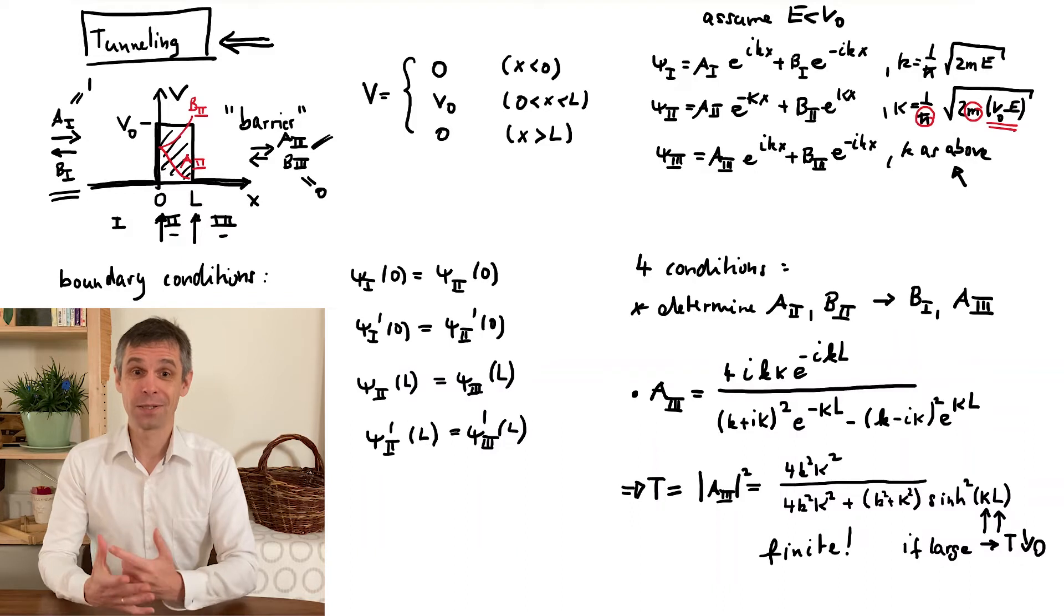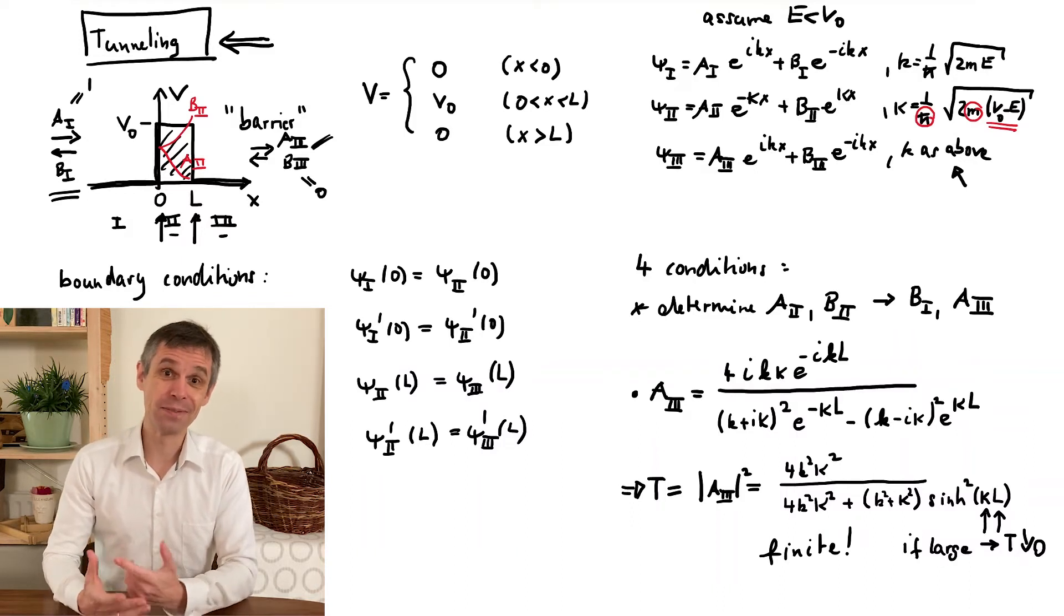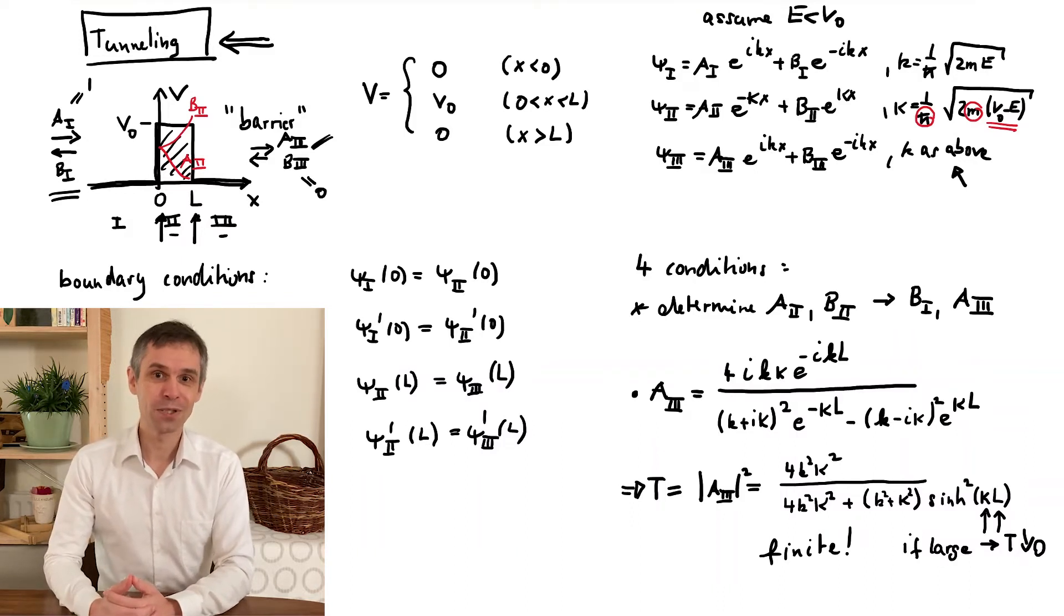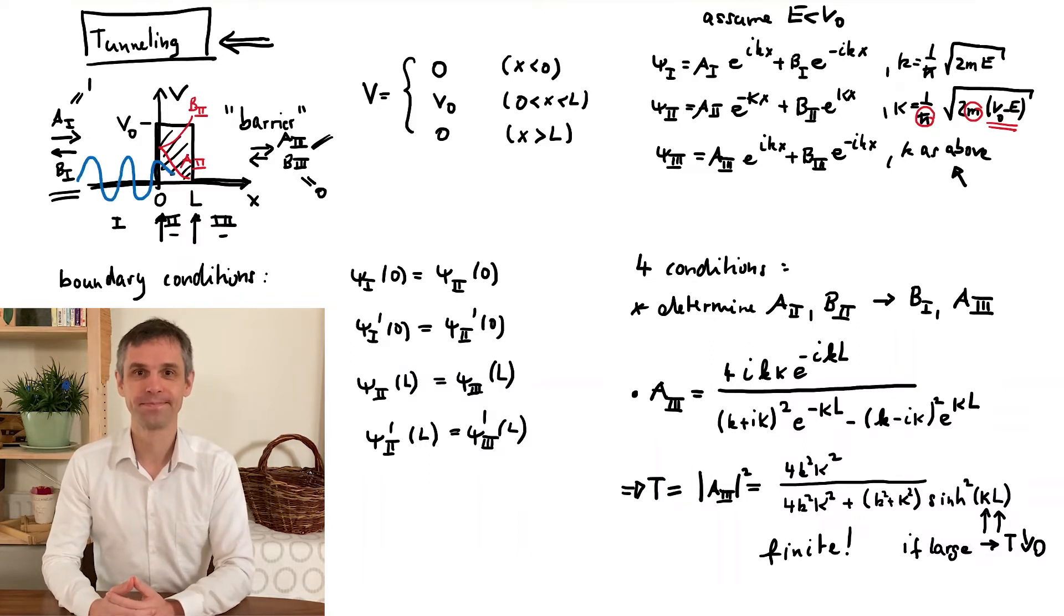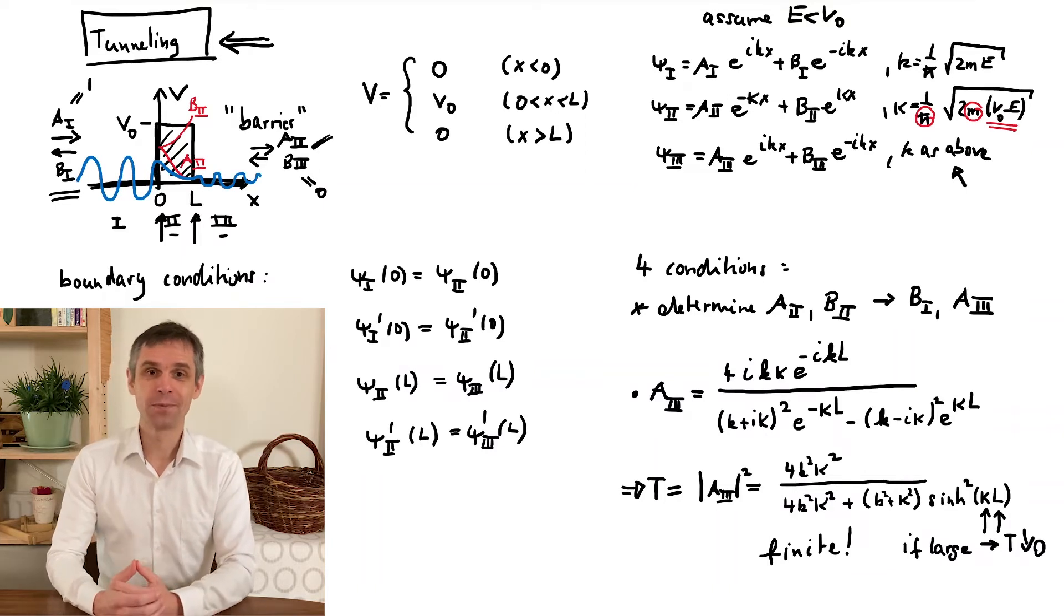Finally, let us sketch the wave function, say again the real part. Here you see how the real exponentials help to mediate between the two regions. The emerging transmitted wave generally has a smaller amplitude, because the transmission probability is finite, but generally not unity.